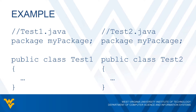Here are some quick examples of how we would set up our code for classes to be included in a package. The left side corresponds to a class called Test1, and the right side has Test2. Notice that both classes are public — step one is taken care of. The name of this package is going to be called myPackage. Both Java files will have to be added to a folder called myPackage, and at the top of each class, before 'public class', we have 'package myPackage;'.